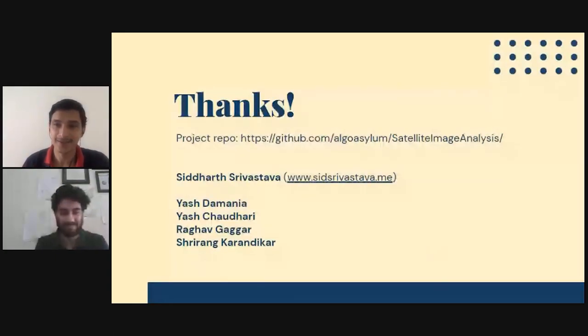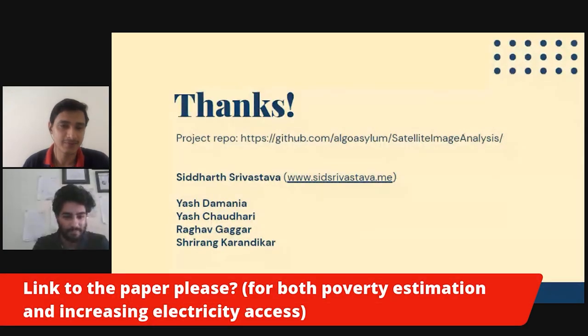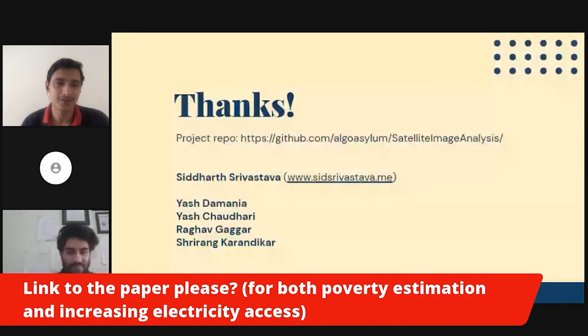Yeah, there are, the chats literally filling out the questions. Unfortunately, we are kind of out of time, but I'll pick a few. So first off, I would like to say really interesting inference that you made about luminosity versus GDP, really interesting one. So let me get on to the questions, at least a few of them. So one of them was, could you post the link to the papers, both to the poverty estimation and increasing electricity access? I think I'll post the link to the slides and I'll add all the resources in the slides itself. So that will be much easier to go through all of the things. I'll send it to you, Ritesh. You can share it with everyone.